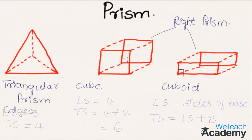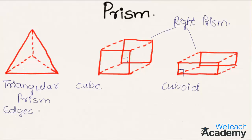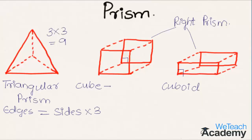Coming to the edges: edges are given by the formula — number of sides multiplied by 3, since the sides of the bases are also counted as edges. So the edges of a triangular prism are 3 × 3 = 9. The edges of a cube are 4 × 3 = 12, and similarly the edges of a cuboid are also 12.